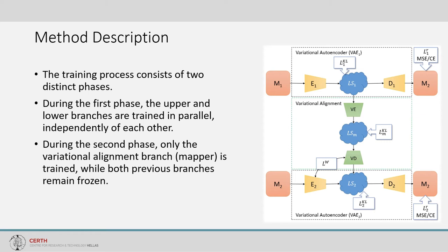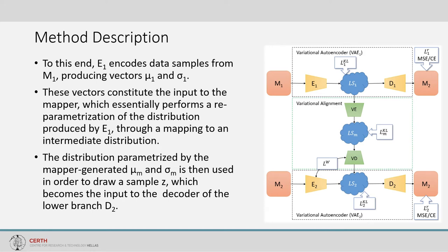The upper branch transitions from M1 to M2 — mapping M1 into a distribution aligned to the final goal. The lower branch is a variational autoencoder, projecting into a distribution that favors reconstruction. The variational alignment branch in the middle aligns the distributions produced by encoders 1 and 2 according to a target goal, acting as a translation mechanism between the two. Training has two phases: first, upper and lower branches train in parallel independently; second, only the variational alignment branch trains while the previous branches remain frozen. Encoder 1 encodes M1 samples producing mu1 and sigma1, which input to the mapper performing reparametrization to an intermediate distribution, from which sample Z is drawn and decoded by decoder 2.